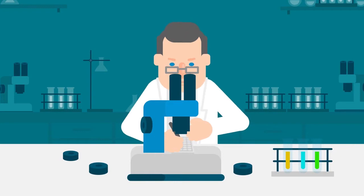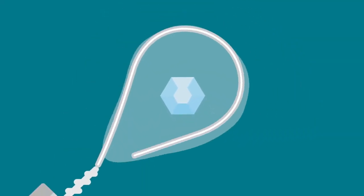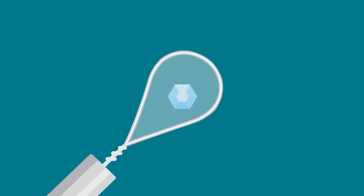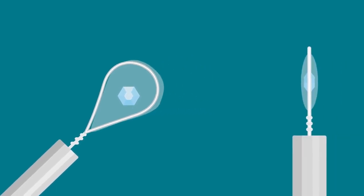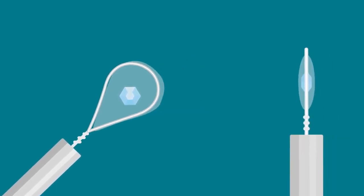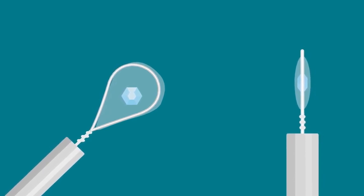Older loop designs allow crystals to be retrieved from drops but have drawbacks that can impact results. First, older loops are made from non-X-ray transparent materials. Crystals are often mounted suspended within a large drop of fluid in the loop, such that the loop material itself can be kept out of the X-ray beam.